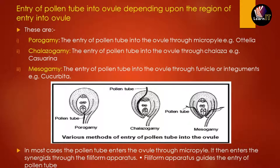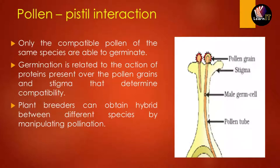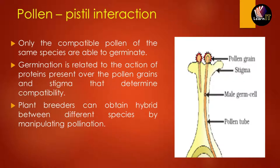After entering through the micropylar end, the pollen tube enters into the synergids through the filiform apparatus, which guides the entry of the pollen tube inside the ovule. Regarding pollen-pistil interaction, the key concept is compatibility — only compatible pollens of the same species are able to germinate. This compatibility is determined by proteins present on the pollen grains and the stigma. Once compatible, the pollen undergoes enzymatic activity and moves through the style into the ovules.